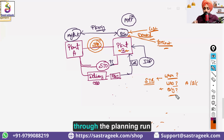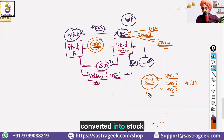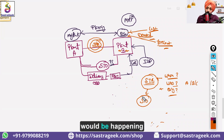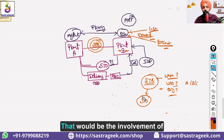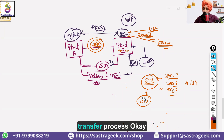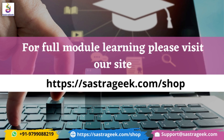Through the planning run, MRP first generates a Stock Transfer Request which contains details of when the material needs to be transferred, which plant will supply it, and how much quantity is needed. This STR is then converted into a Stock Transfer Order, and further processing happens. That is the involvement of the planning team in the stock transfer process.